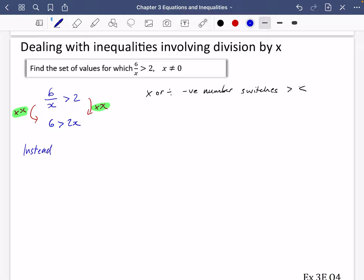So instead of multiplying both sides by x, as this may be negative, we multiply by x squared, as x squared is always positive - or really I should say greater than or equal to zero. So multiplying by x squared is going to be the trick.